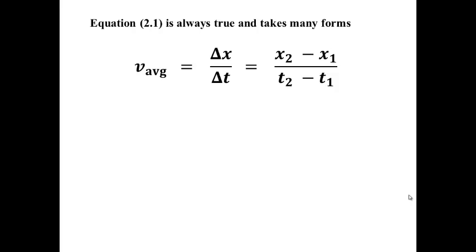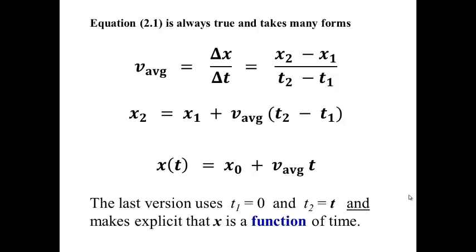Equation 2.1 is always true and can be written in many different ways. If you take the definition of delta x over delta t and rearrange it, you get x2 equals x1 plus v-average times delta t — that is, final position equals initial position plus average velocity times delta t. If we let our initial time be zero and our final time be t, then x as a function of time equals x-naught plus v-average times t, where x-naught is the initial position.